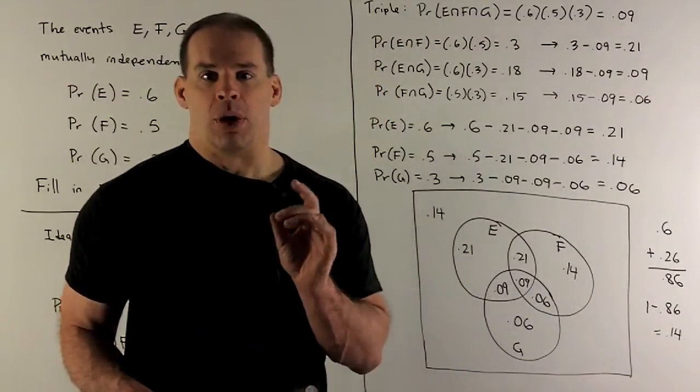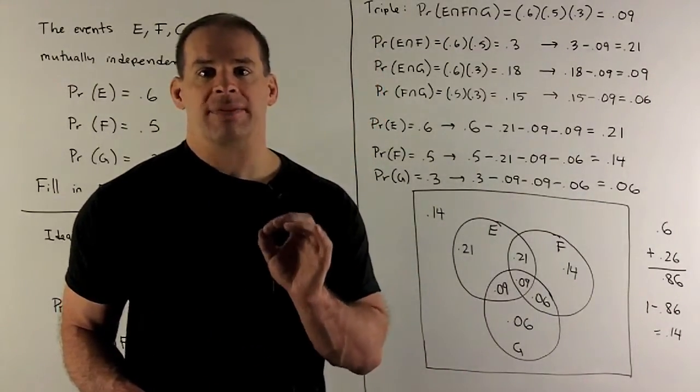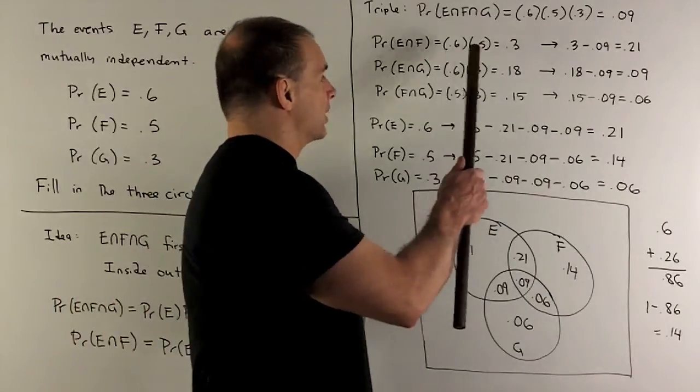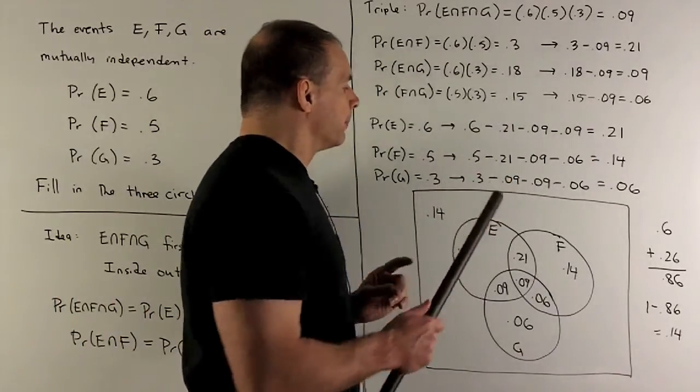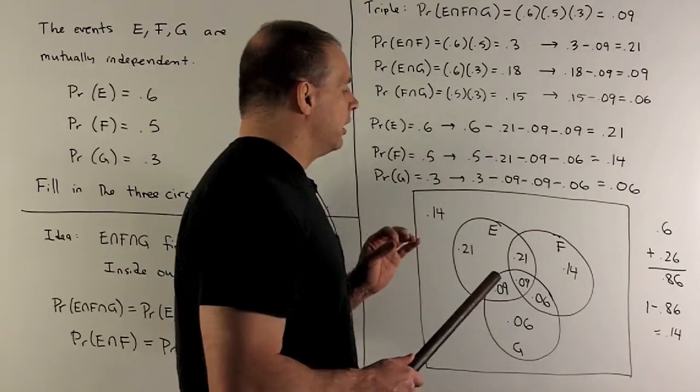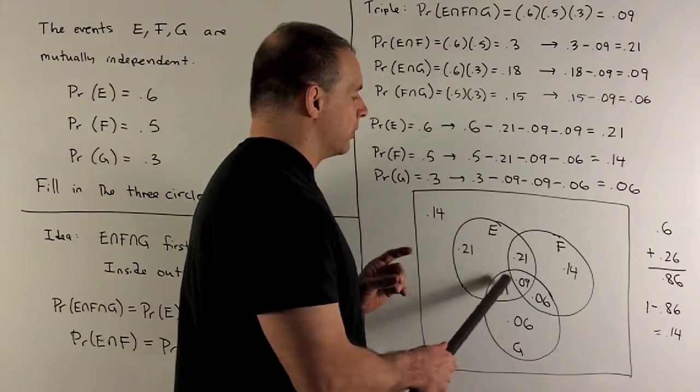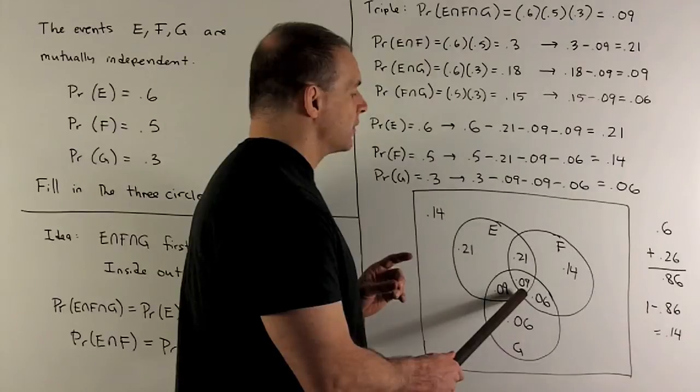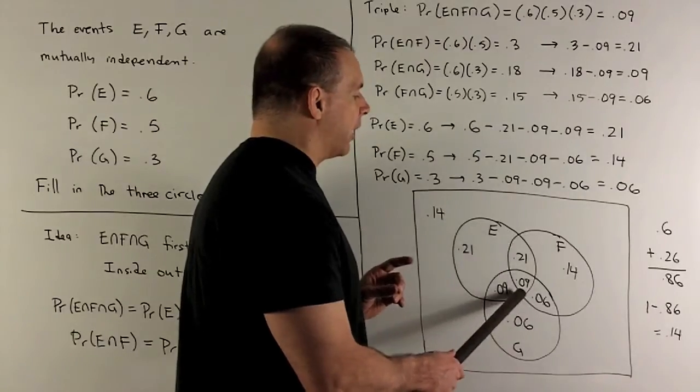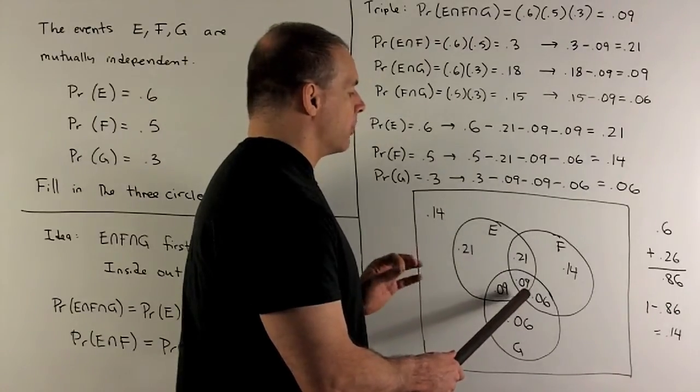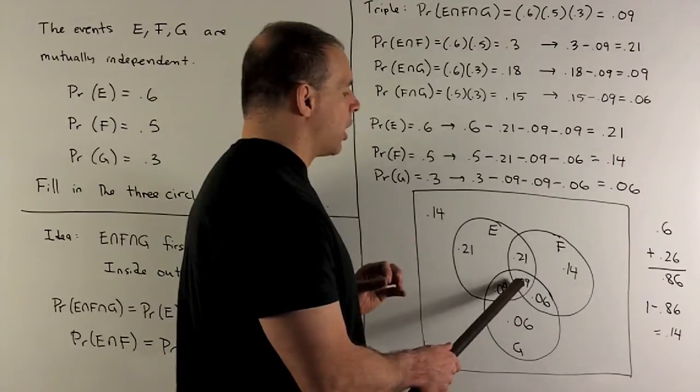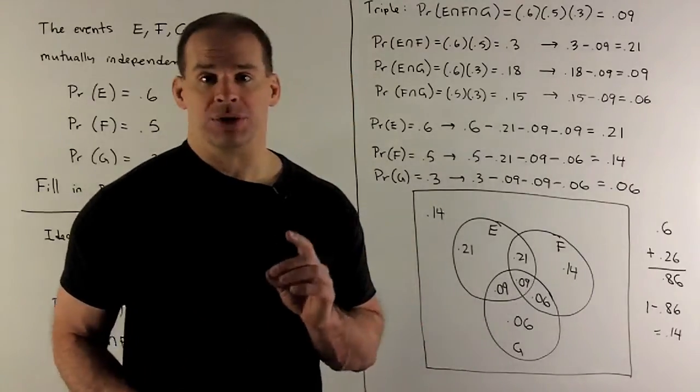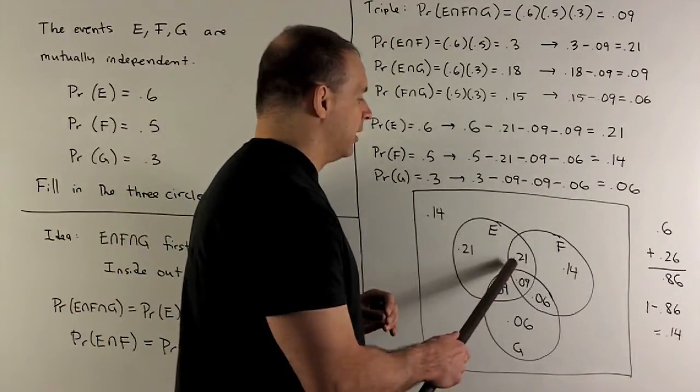Then, if I want, say, probability of E intersect F, we just multiply, we get 0.6 times 0.5 gives me 0.3. But what I want to fill in here is going to be what's outside the intersection of three events. So I want this piece here to add up to 0.3. So I'm just going to take 0.3, subtract off the 0.09, I get 0.21, and then we fill that in in this piece.